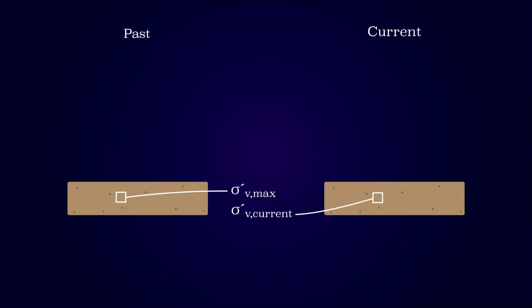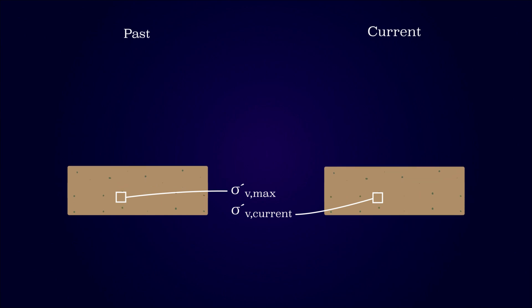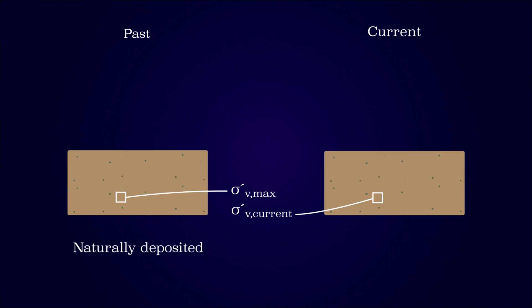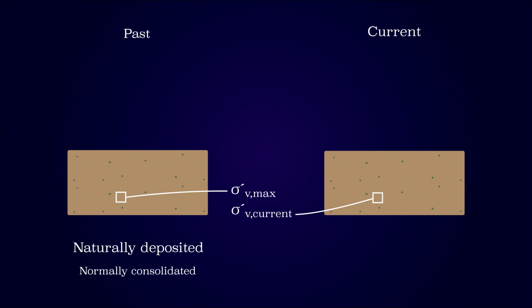The higher past load could also originate from the overburden pressure of overlying soil, which in time could have been subjected to erosion due to weathering conditions like great winds.